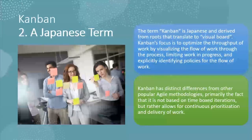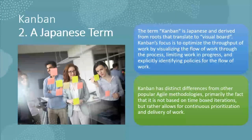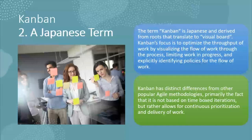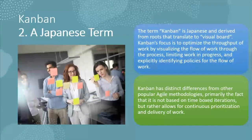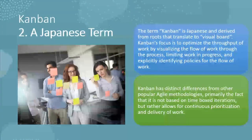Number two: Kanban is a Japanese term derived from roots that translate to 'visual board.' Kanban's focus is to optimize the throughput of work by visualizing the flow of work through the process, limiting work in progress, and explicitly identifying policies for the flow of work. Kanban has distinct differences from other Agile methodologies — primarily the fact that it's not based on time-box iterations like Scrum, but rather allows for continuous prioritization and delivery of work.